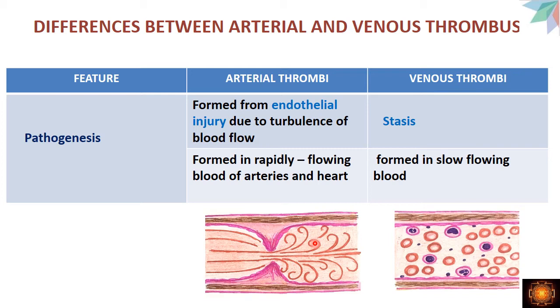In summary, the main cause for venous thrombi is stasis, whereas the main cause for arterial thrombi is endothelial injury due to turbulence. Arterial thrombi are formed in the rapidly flowing blood of arteries and the heart, whereas venous thrombi are formed in slow flowing blood.